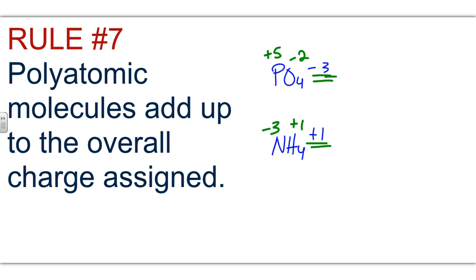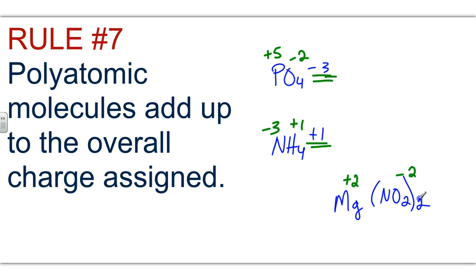Watch out when dealing with compounds that contain polyatomic ions — the parentheses are a big deal. For example, magnesium nitrite Mg(NO₂)₂: magnesium is plus two because it's in group two. Oxygen is minus two; two times two gives four oxygens, and four times negative two gives negative eight overall. I need the nitrogens to total positive six, and because there are two nitrogens, each nitrogen is plus three — three times two gives the plus six needed. Plus eight plus negative eight cancels out, giving zero overall.